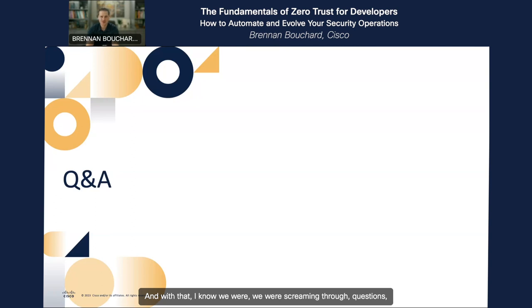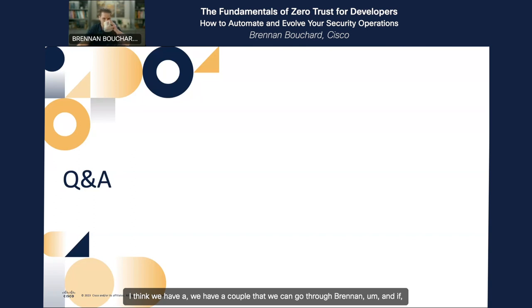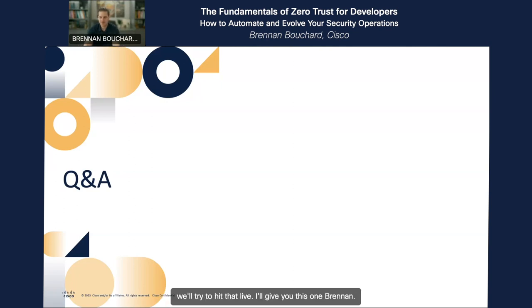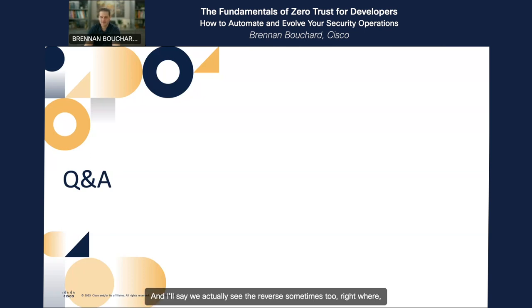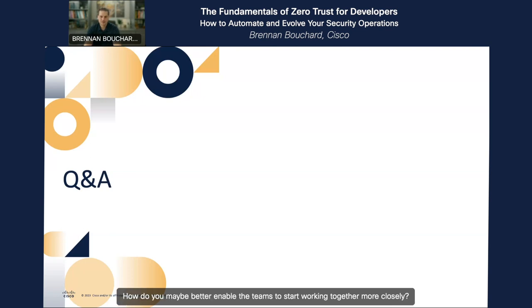With that, Mac, do we have any questions queued up? We have a couple. To the audience, feel free to add questions in the Q&A — if we have time, we'll try to hit them live. The first question: our DevOps team has tried to work closer with the security operations team but with limited success. Do you have any suggestions for getting them interested? And we actually see the reverse sometimes too — where the SecOps team wants to work more with the DevOps team but couldn't necessarily build a lot of what was just shown. How do you better enable teams to start working together more closely?